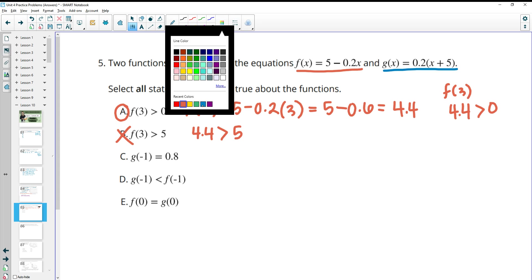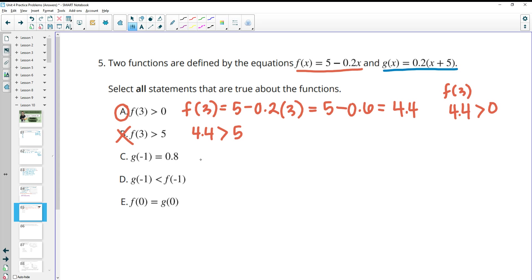Part C asks us to use the g function. So g(-1). So let's figure out what g(-1) equals. And that's going to be 0.2 times the quantity -1 + 5. So we'll simplify inside those parentheses first, which is going to be 4. And then 0.2 times 4 is 0.8. So then this is saying 0.8 = 0.8. And that is true.